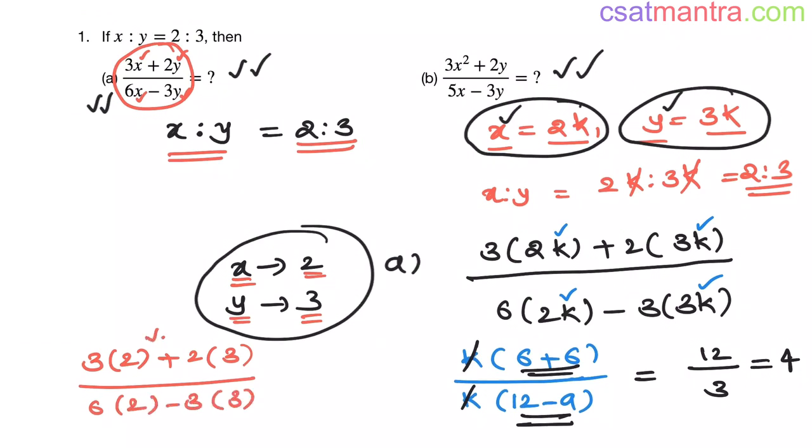There is no k here; here k got cancelled. So x and y powers in each term in numerator and in denominator should be the same. Then we can take x equals 2, y equals 3, because k will get cancelled in numerator and denominator. So there will not be any problem in that.